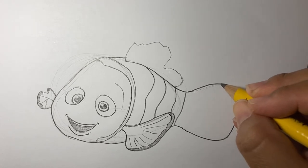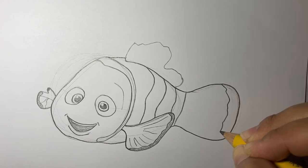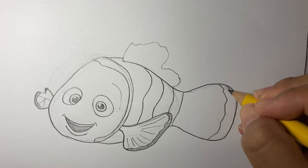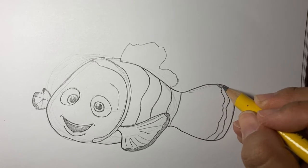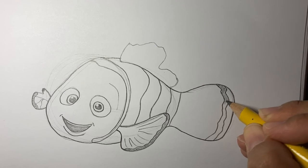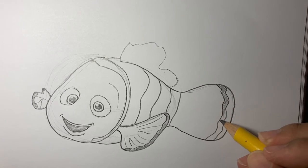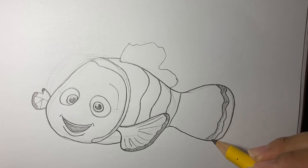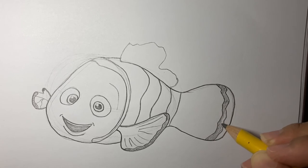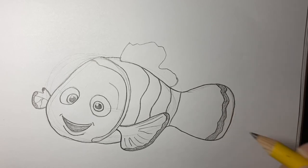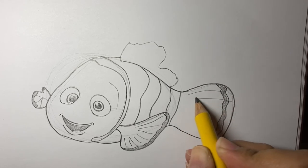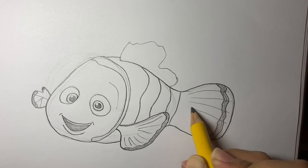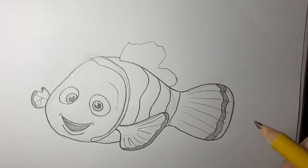And then we're going to do one line right here, kind of squiggly, doesn't matter. And then one more squiggly line that kind of follows it. And then that one is going to be colored in. And then from here we're going to have little lines that come in, like this. And then that's his back fin.